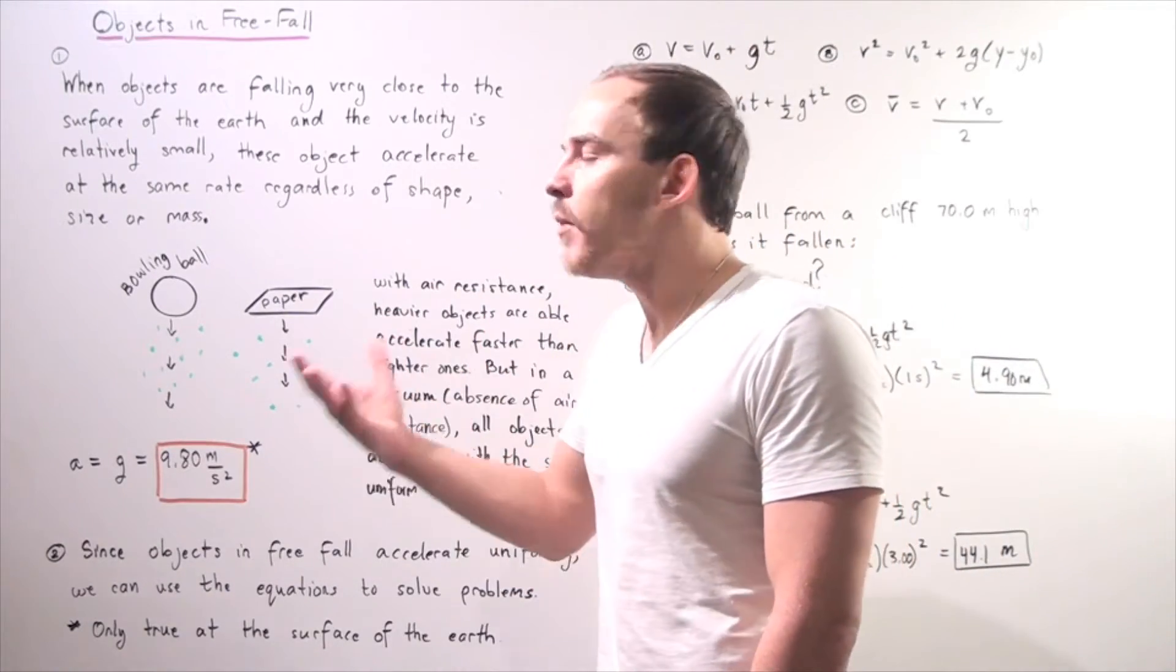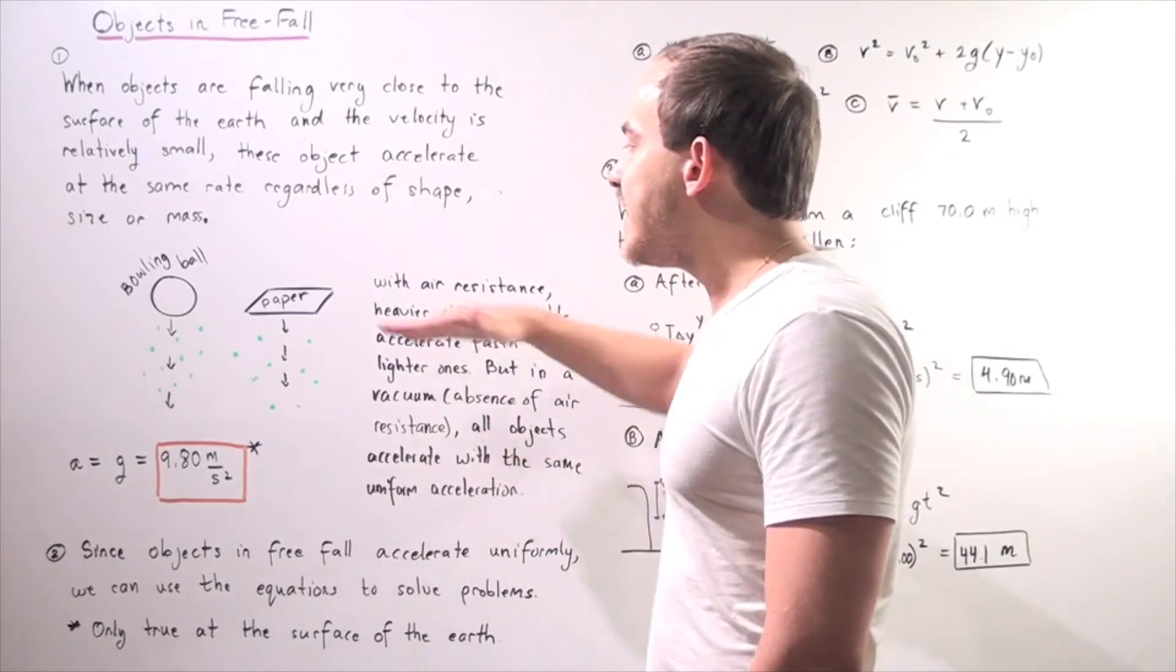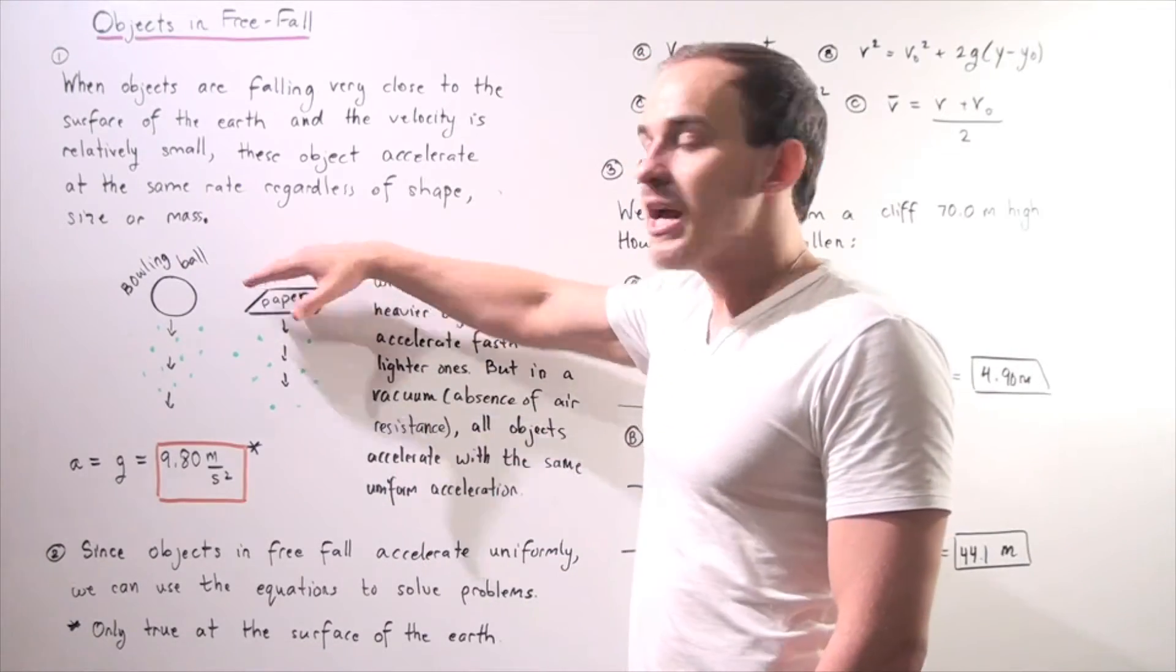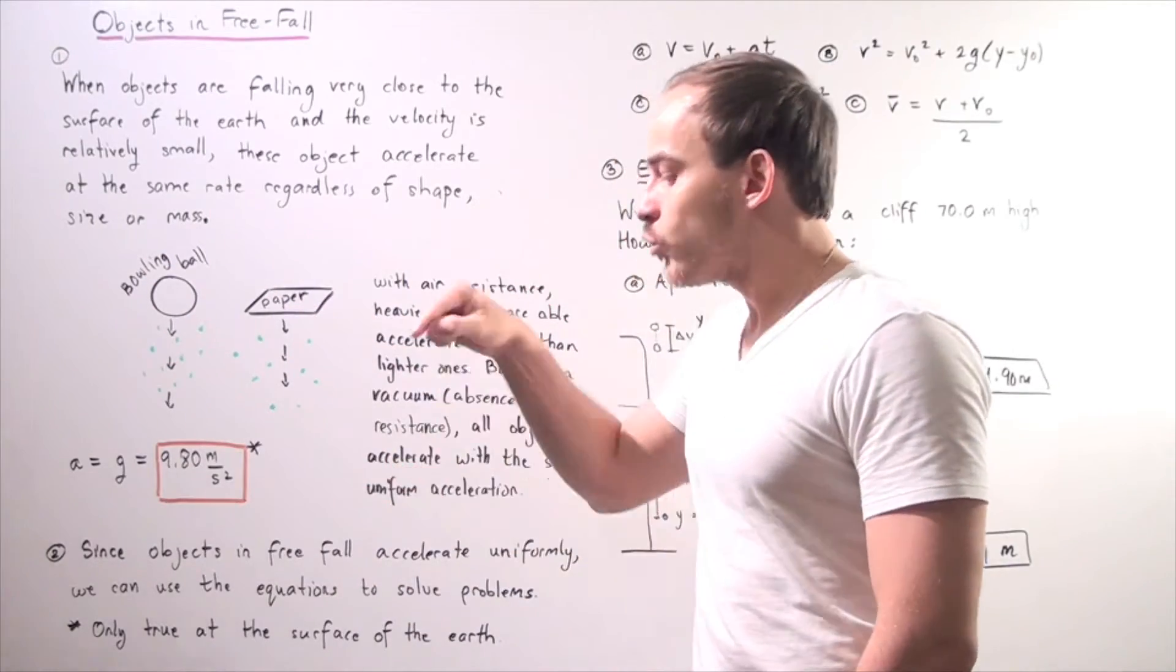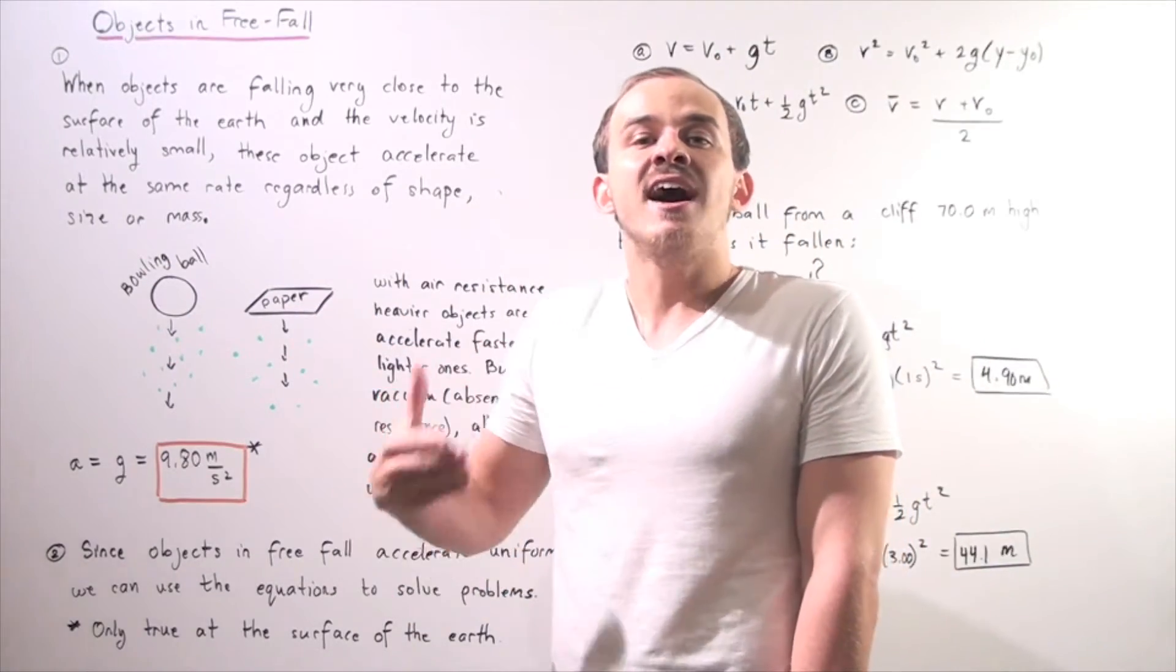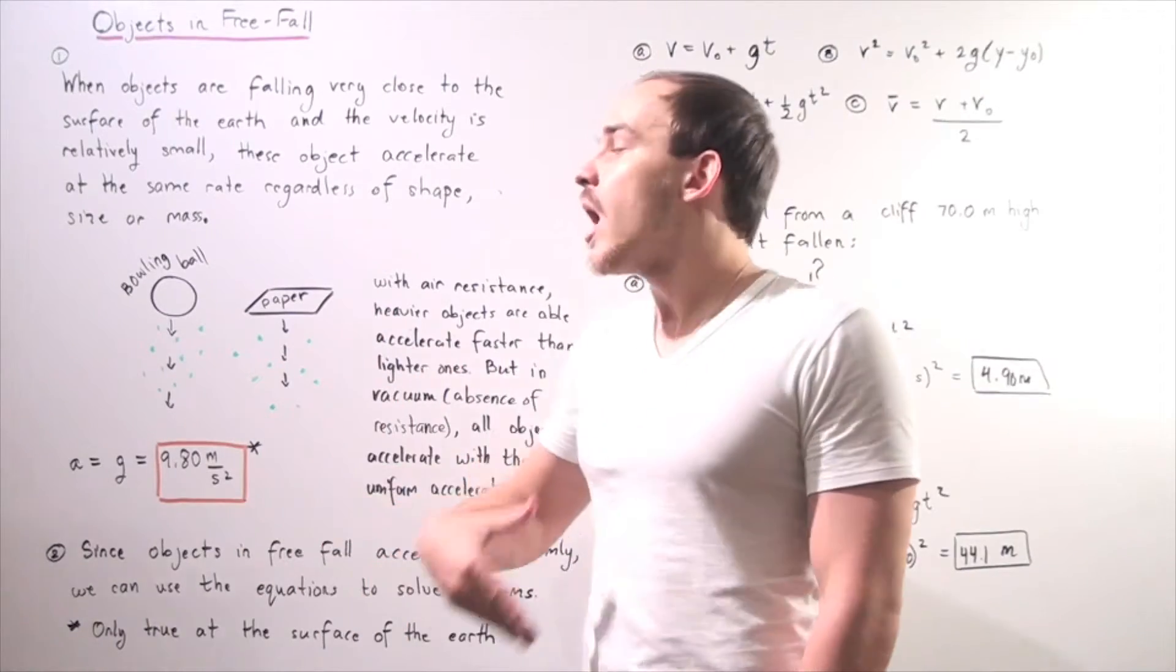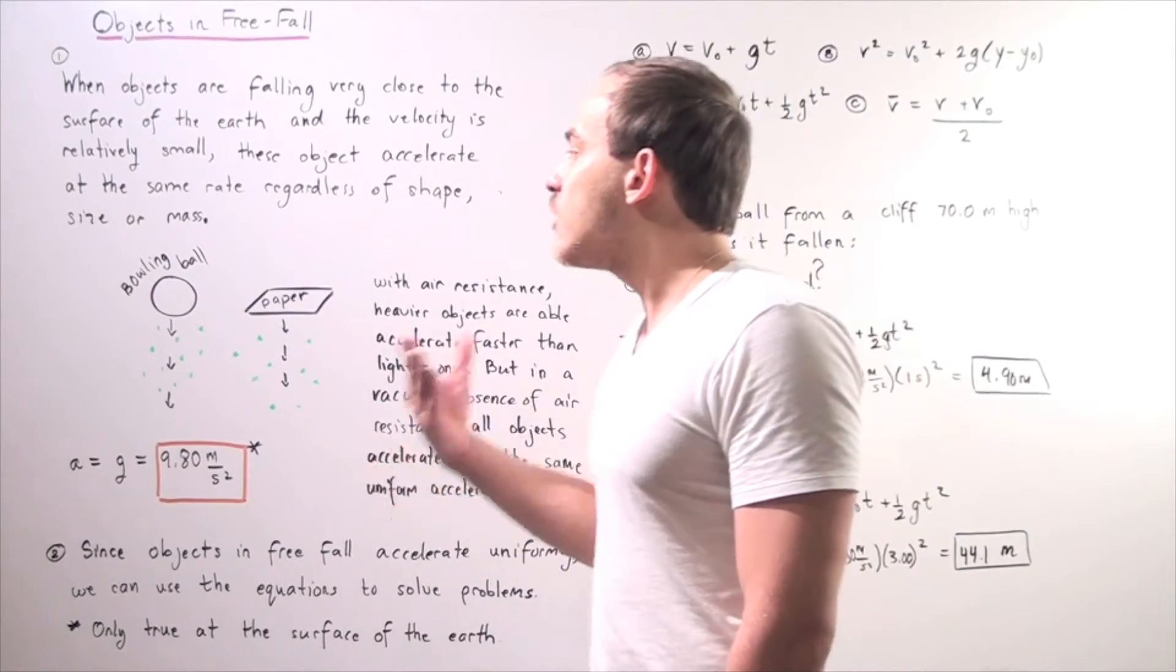For example, if I take a very heavy bowling ball and I take a flat piece of paper and I let go, the bowling ball will clearly reach the ground first because it has a higher mass and therefore a larger momentum.